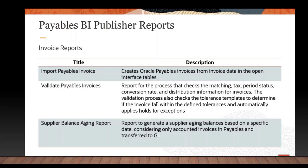Another process is Validate Payable Invoices. This is a process that checks the matching, tax, period status, conversion rate, and distribution information for invoices. The validation process also checks the tolerance template to determine if the invoice falls within the defined tolerance and automatically applies any holds for exceptions. The final one under invoice reports is the Supplier Balance Agent Report, which generates supplier agent balances based on a specific date, considering only accounted invoices in payables transferred to GL.